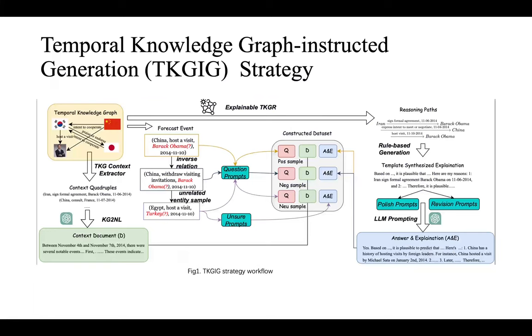To construct such a dataset, we propose the TKGIG framework. TKGIG leverages the structured knowledge inherent in temporal knowledge graphs, which have been effectively utilized for explainable event forecasting. The core insight of our approach is to first apply explainable TKG reasoning models to generate reasoning paths for a given query about the future event.